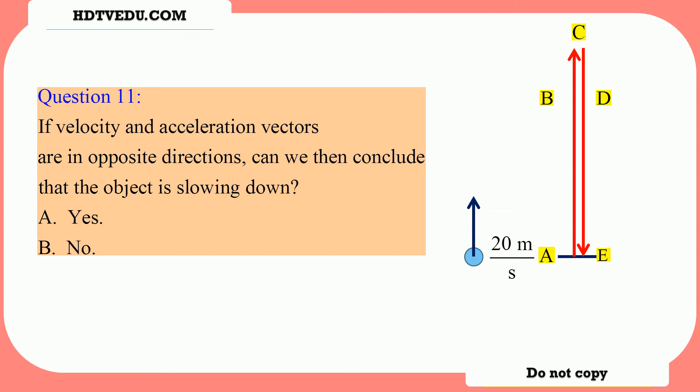Let's look at from A to B. Acceleration is down, velocity is vertically up — the object slows down. From B to C, velocity is vertically up, acceleration due to gravity is along negative Y. Acceleration and velocity vectors are in opposite directions — it slows.